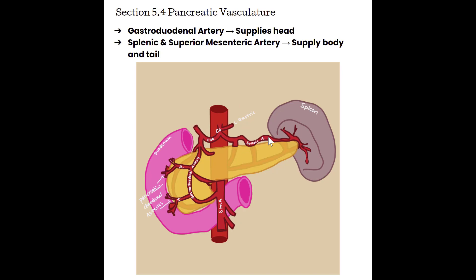The splenic artery is going to mostly head to the spleen, but it also has lots of little branches that come down and perfuse into the pancreas. As far as venous drainage goes, it is performed mostly by the splenic vein. We do get a little bit of drainage from the superior and inferior mesenteric veins, and all that blood pools back into the portal vein to be processed by the liver.